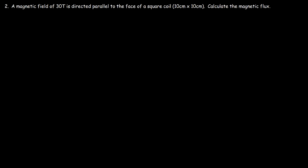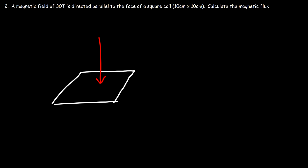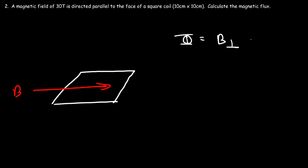The magnetic field is not perpendicular to the face of the coil — rather it's parallel to it. Because the field is not going through the surface of the square coil but just passing by it, the flux is going to be zero. The flux equals the component perpendicular to the coil times the area, and there is no perpendicular component, so the flux is zero — zero webers.